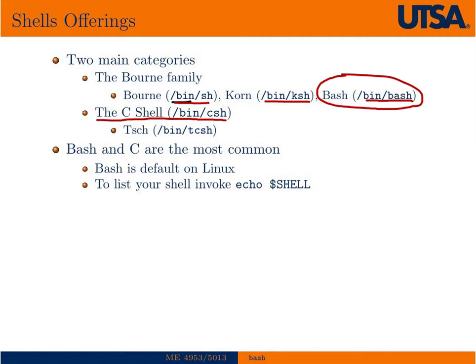Another popular shell is the C shell. Of the Bourne family shells, a lot of the syntax is very similar, and the C shells are a little bit different. Obviously, bash and C are the most common. Bash is the default on Linux.